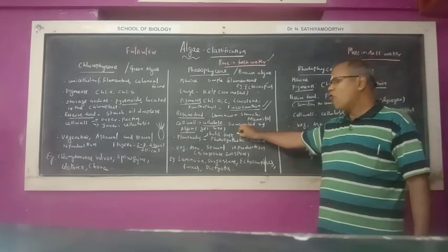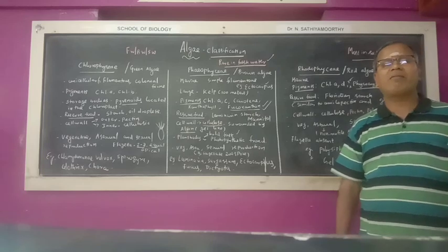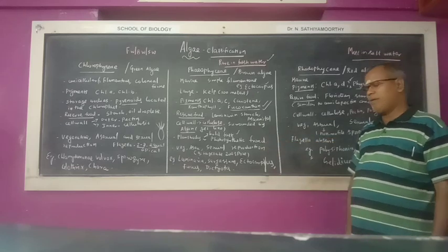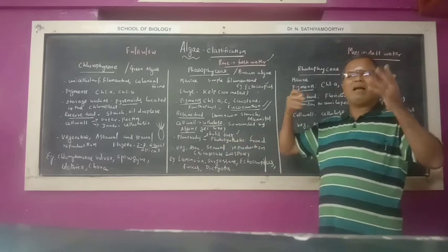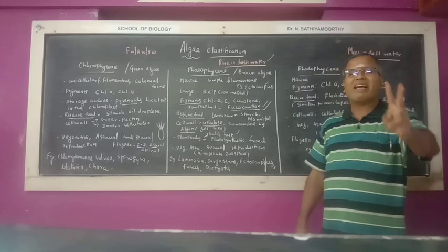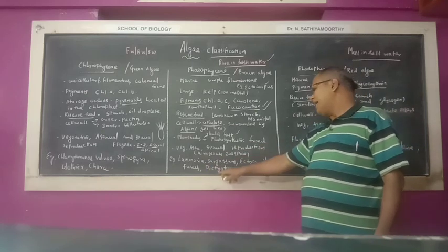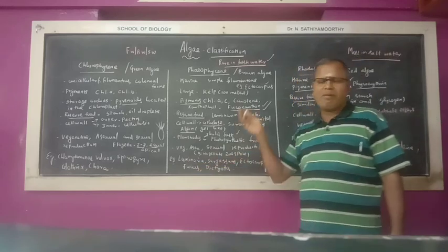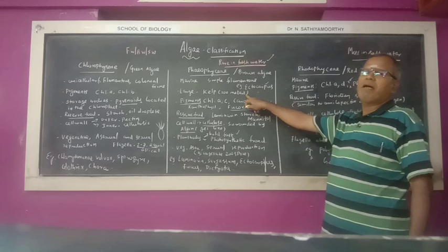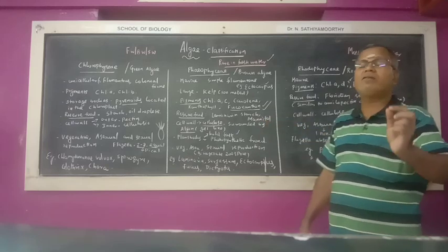The plant body has male and female fronds. Asexual reproduction occurs by flagellate zoospores. Examples include Laminaria, Sargassum, Ectocarpus, Fucus, and Dictyota. Laminaria and Sargassum are economically important. The largest alga is the kelp, which can grow up to a hundred meters.